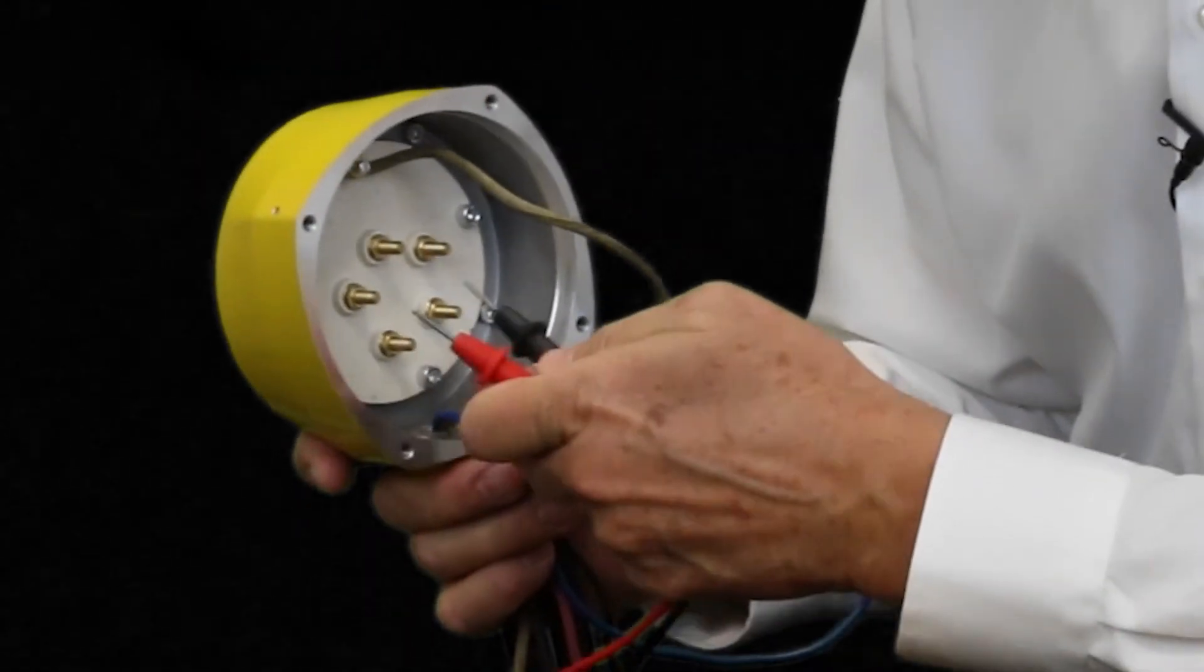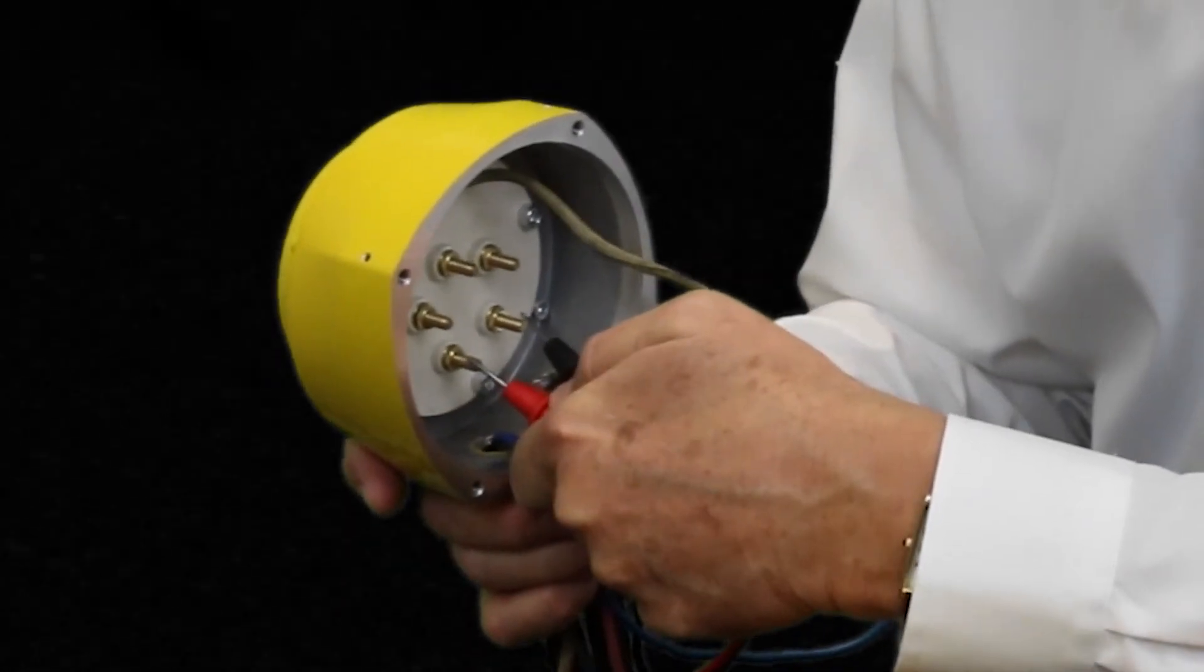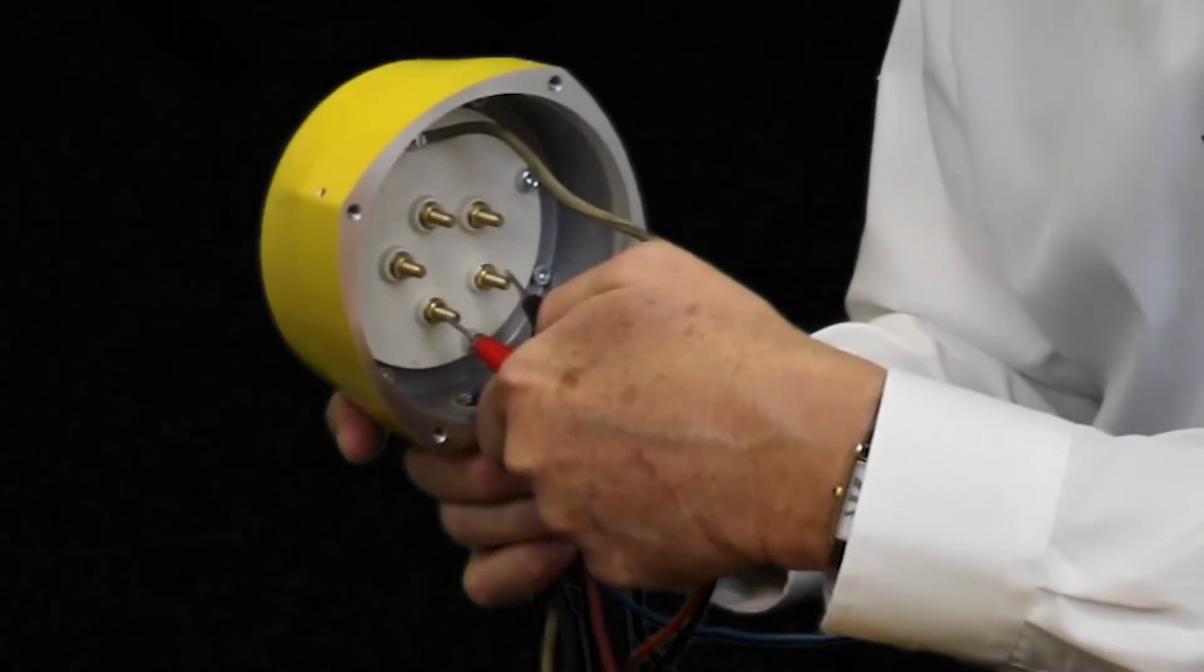To check the resistance across the thermal protection switches, we put the probes across terminals T1 and T2.